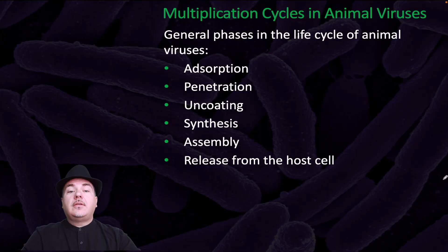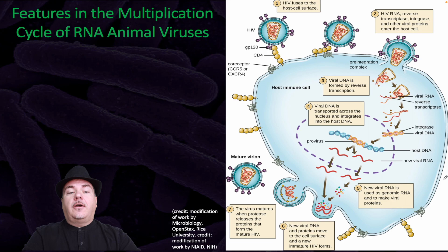The general phases in the life cycle of animal viruses are adsorption, penetration, uncoating, synthesis, assembly, and release from the host cell. Here's an example using an RNA animal virus, in particular the HIV virus.